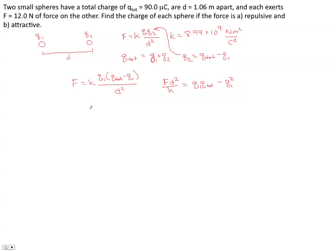I will add q1 squared to both sides and subtract q1 times q total from both sides. That makes the left hand side of the equation look like this, and the right hand side of the equation is zero.